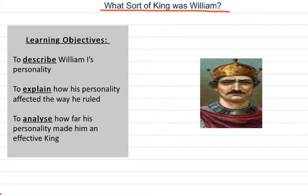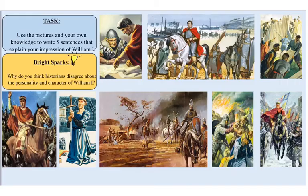We're really going into the idea of what sort of king was William, what sort of person was he and how did he run a country. Was he a very nice, caring, laid-back king? Was he harsh? Was he aggressive? Was he violent? That's what we need to build up as a picture because that's going to inform next lesson, which is on the Harrying of the North. You won't know what that is yet, but maybe today will give you an idea of what it could involve.